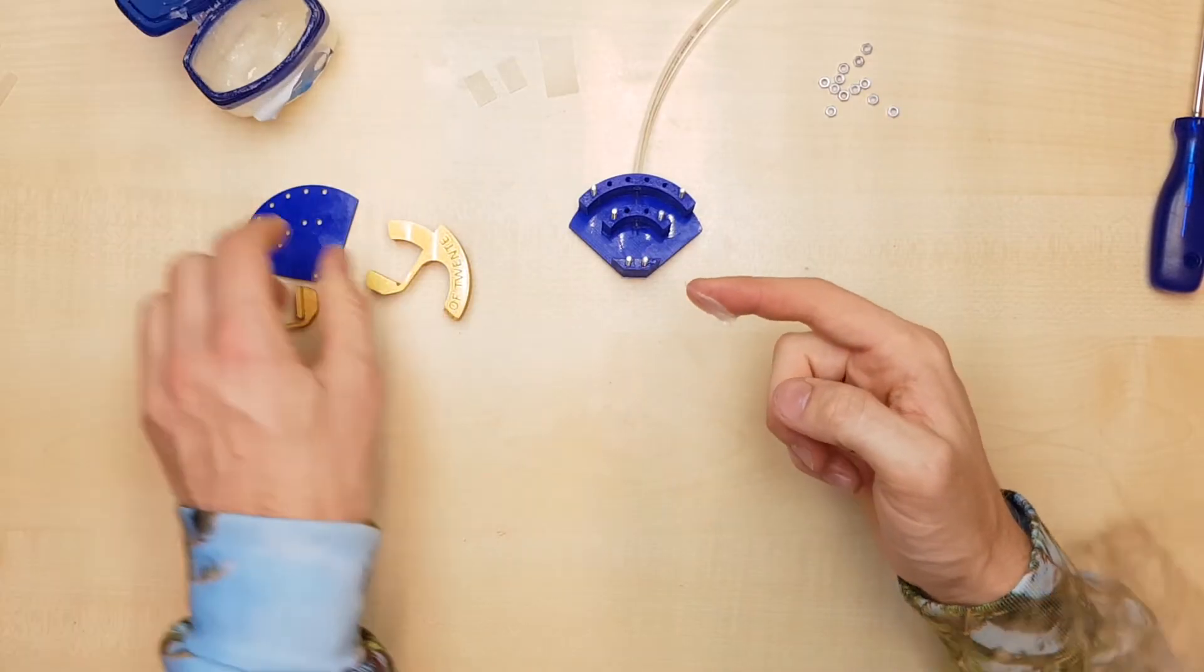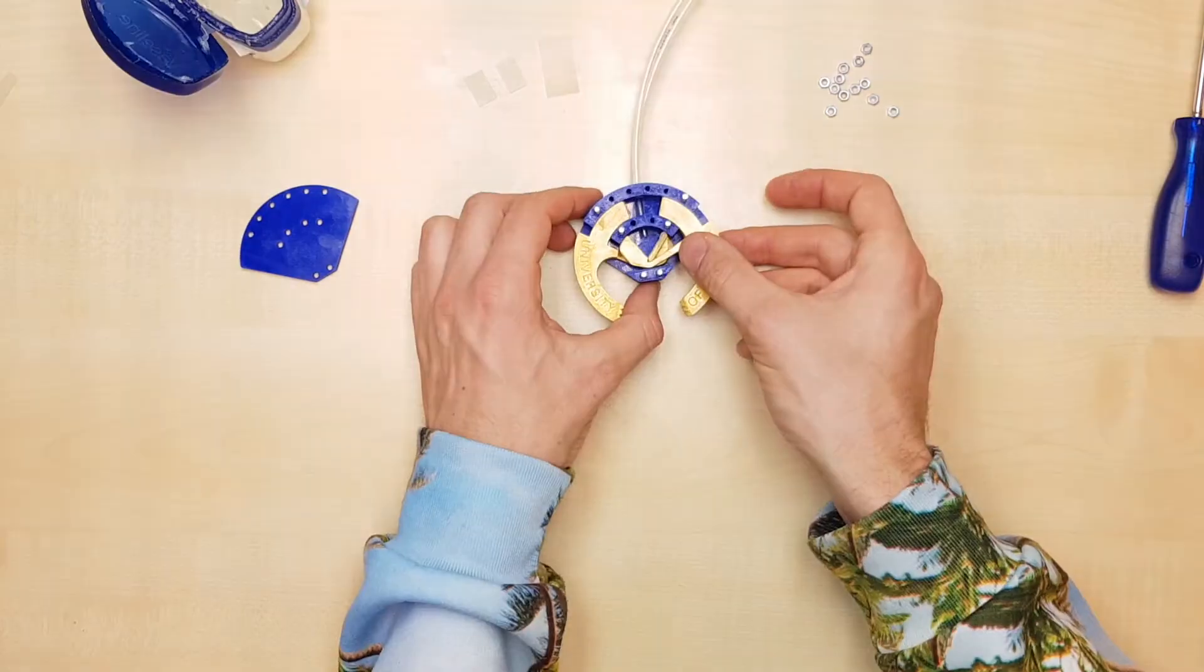Now we apply petroleum jelly, such as vaseline, on the grippers and seals.